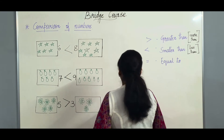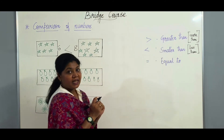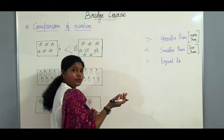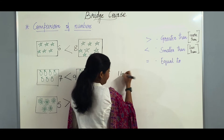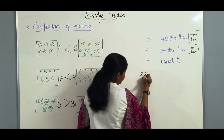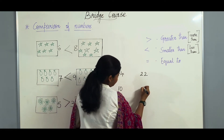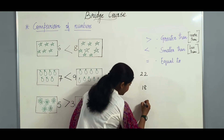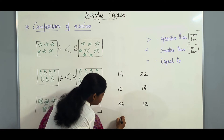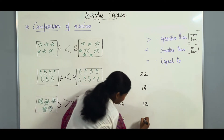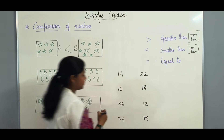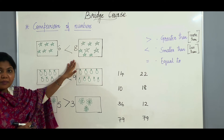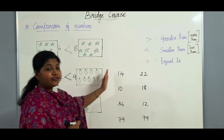Now in the same way, let us go further and use the sign for comparing numbers. Here I will be giving you a few numbers — let us use 2-digit numbers. For example: 14 and 22, 10 and 18, 36 and 12, 17, 9 and 70, 9. When you have pictures it is very easy to count, but what if you have numbers? We need a method for that.